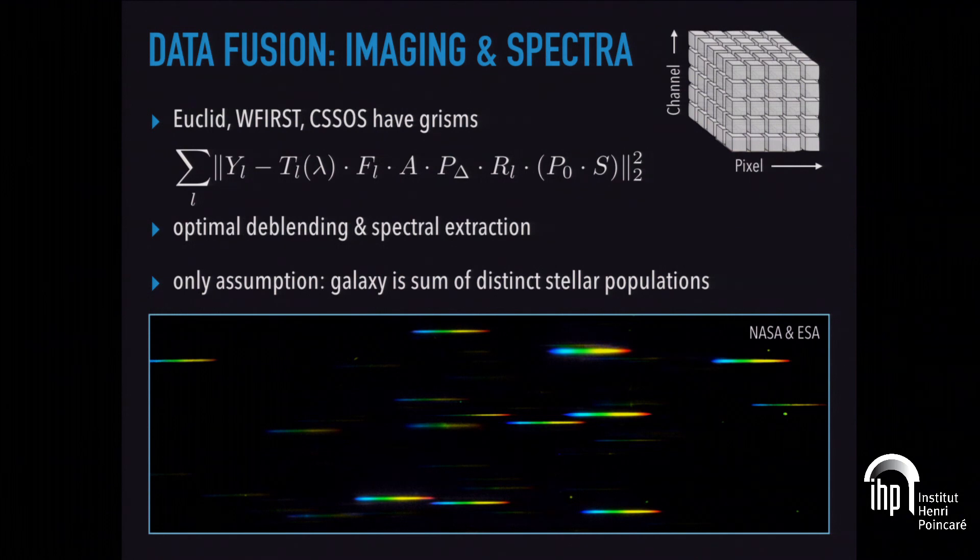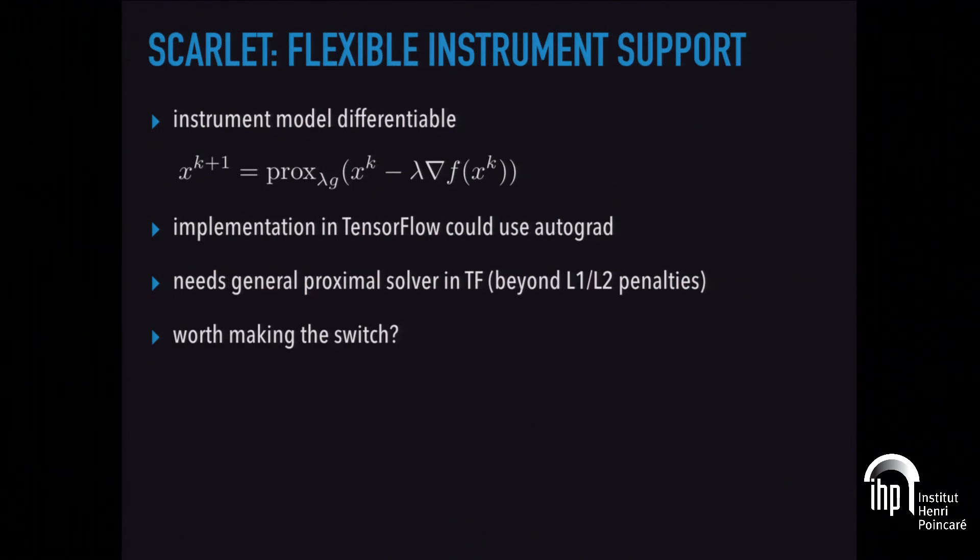The only assumption for making any of that happen is that the sources we see in a scene, either clumps of an individual galaxy or neighboring galaxies, that you can describe this as a sum of distinct stellar populations. It's the only assumption we've made here.